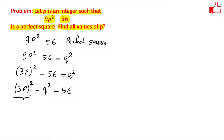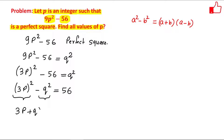Now this is of the form a² - b², and if you remember the formula, a² - b² = (a + b)(a - b). So we can write (3p + q)(3p - q) = 56. This is the product of two numbers.